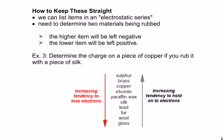A good way to answer these questions is by using this little chart. Anything higher on this list will gain electrons and be negative; anything lower will lose electrons and be positive. So if we rub glass with silk, the silk is negatively charged and the glass is positive. For fur and ebonite, the ebonite is higher so it's negative, the fur is positive. For example, if we rub copper with silk, copper is above silk so copper would be negative and silk would be positive.